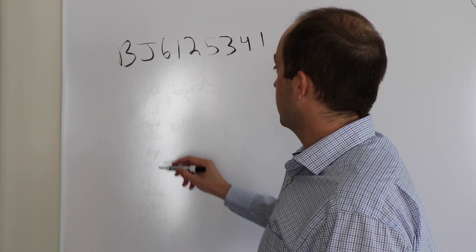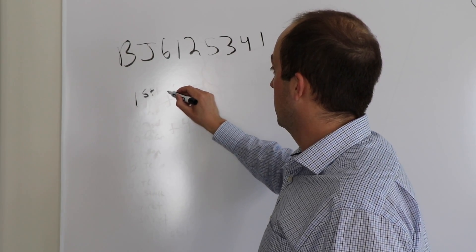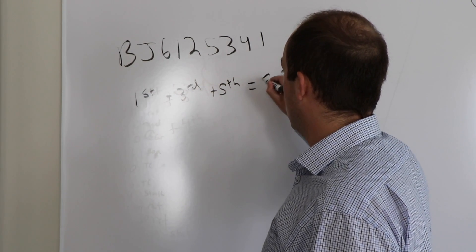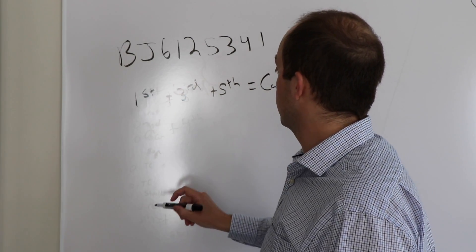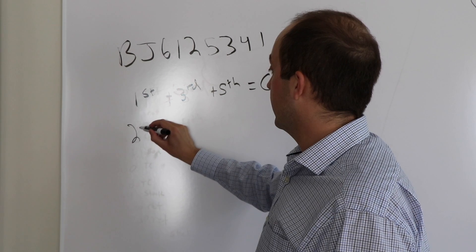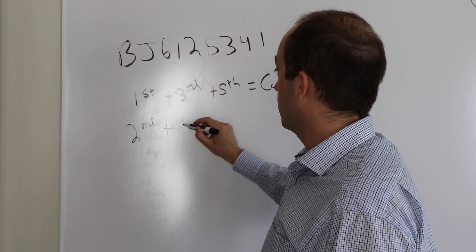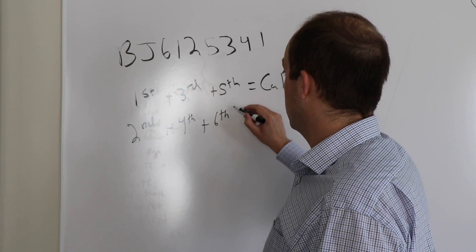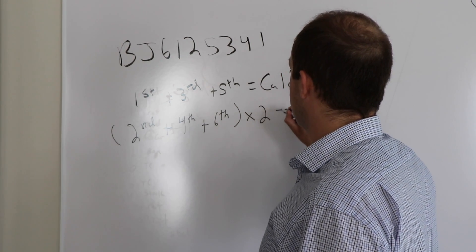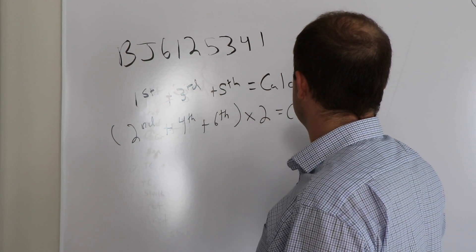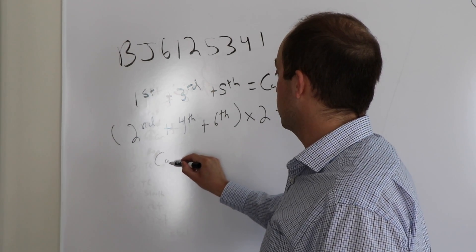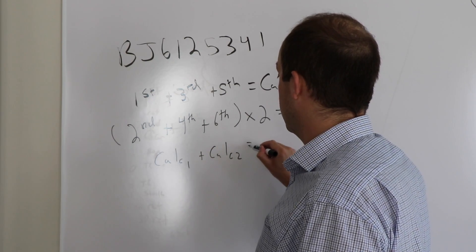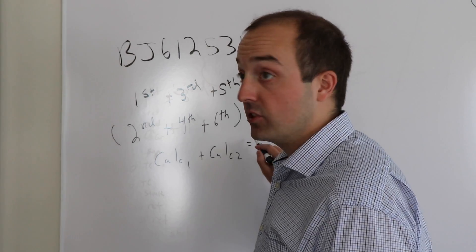First, you add the first plus the third plus the fifth digit — that's your Calc 1, your first calculation. Then you add the second plus the fourth plus the sixth digit, and multiply that by two — that's your Calc 2. You add Calc 1 plus Calc 2, and the digit in the ones place should equal the seventh digit.